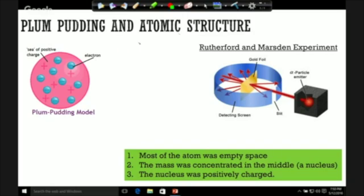Moving on then to Plum Pudding and Atomic Structure. This is the explanation of how we come to the model of the atom that we see today, where we have a positive nucleus surrounded by electron shells with electrons in them.